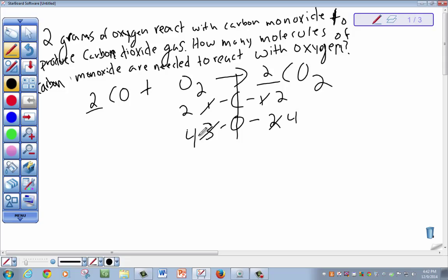So to begin this stoichiometry problem, we start with what's our given. We are given 2 grams of oxygen and what we need to find. What we need to find is molecules of carbon monoxide.